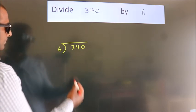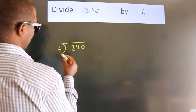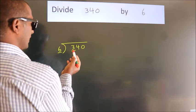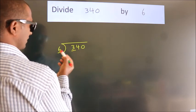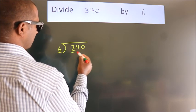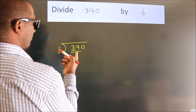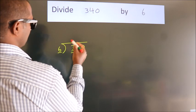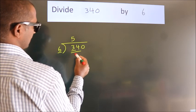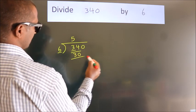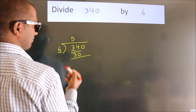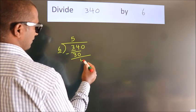Next, here we have 3, here 6. 3 is smaller than 6, so we should take 2 numbers: 34. A number close to 34 in the sixth table is 6 times 5 equals 30. Now we should subtract. We get 4.